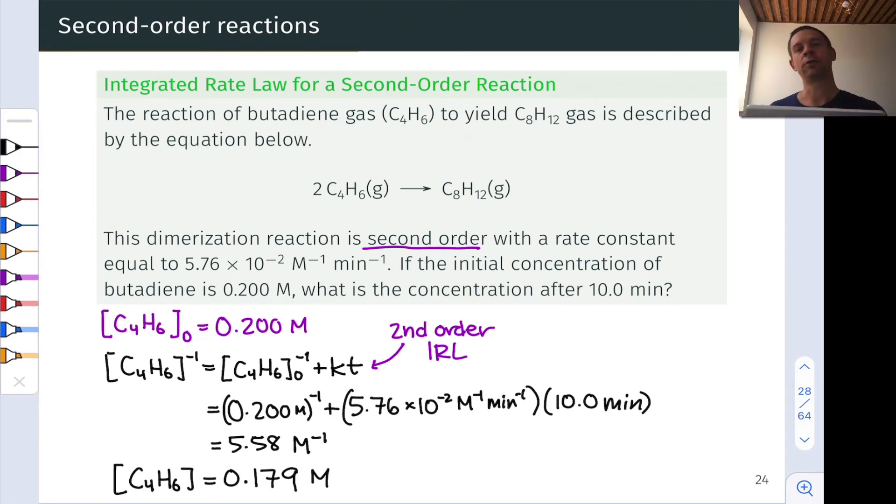So operationally, this is very similar to the first problem. It's just that the knowns and unknowns have changed. Here, we know the time, we know the initial concentration, we know the rate constant, and we're interested in the final concentration at the time point of interest.